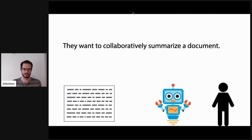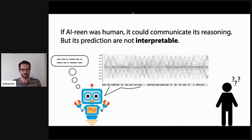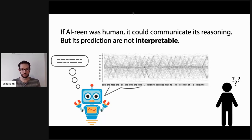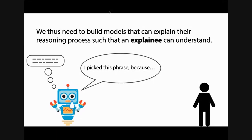Let's go through an explicit example. Jesse and Irene want to collaboratively summarize a document. Irene is trained as a summarization model and has an idea of how to summarize it. Jesse, who is a subject matter expert, also has an idea. However, they might not have the same idea. If Irene were human, it could communicate its reasoning. But unfortunately, predictions from neural networks are not interpretable. If you want to visualize the internals of a network that produces text, you get a high-dimensional vector of states changing over time — not very intuitive to a human.